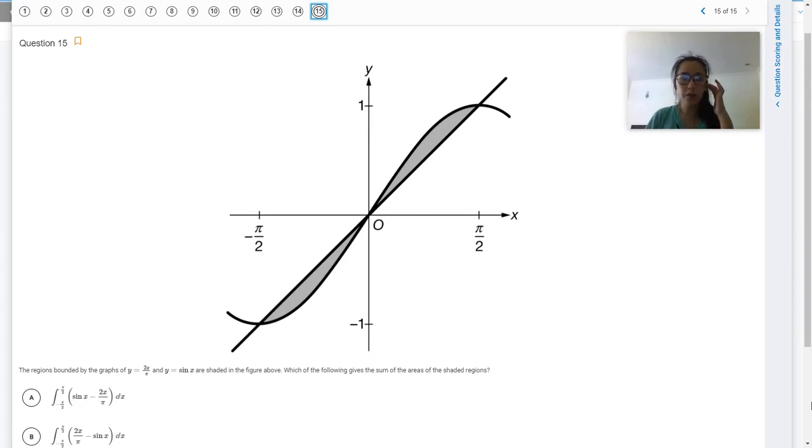So this one's really similar to number 14 because it talks about some areas and there's three intersection points. So one, two, three intersection points, meaning that there's two areas that you're looking for the area of.